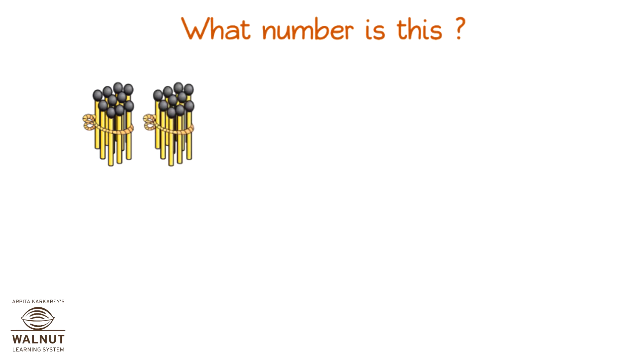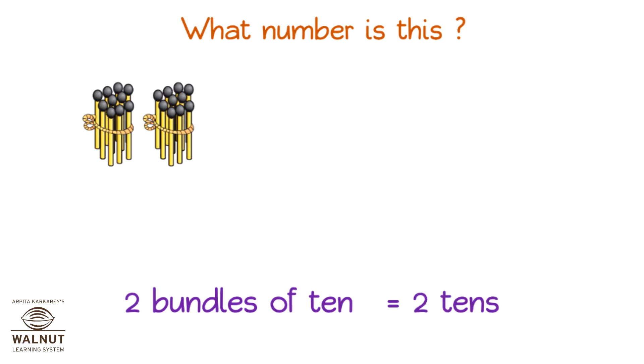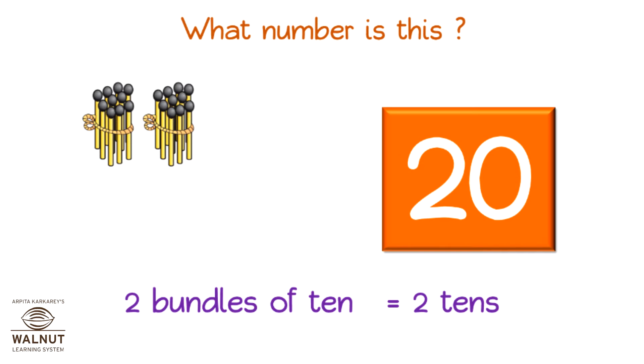What number is this? Two bundles of ten is equal to two tens. That is twenty.